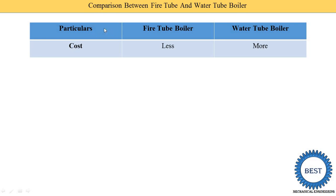The cost of the fire tube boiler is less and water tube boiler is higher. The pressure is higher in water tube boiler, so when pressure is higher we require a larger thickness of the pipe or the shell, and larger thickness increases the cost of the water tube boiler. In a fire tube boiler the pressure is near to 25 bar, so compared to the water tube boiler, fire tubes require less thickness of the tube and shell, meaning less material cost and overall cost of the fire tube boiler is reduced.